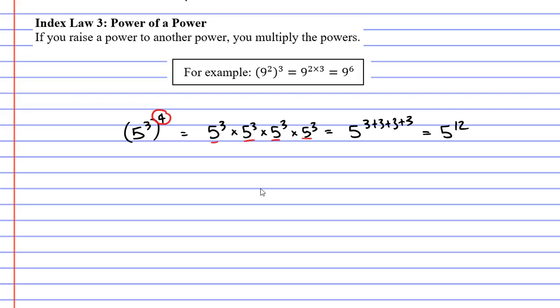Now, you may notice that we could have done this by simply multiplying the two powers at the beginning, the 3 and the 4. 5 to the power of 3 times 4 gives us 5 to the power of 12.